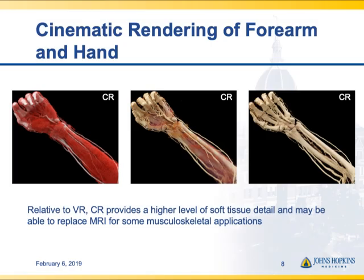Here's an arm, and as you can see with cinematic rendering you can show a variety of different tissues depending on how you've windowed your settings. You can show soft tissue, muscle, and skin very well. Contrast-enhanced vessels show up really well, and bone shows up particularly well — a very high contrast material where you can see very small detail.